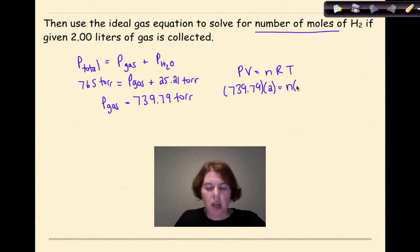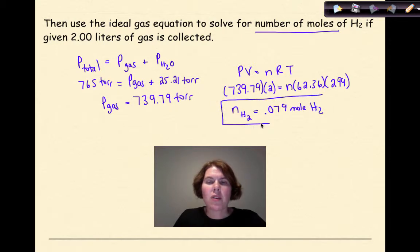We're solving for number of moles, and then we have our gas constant, which is 62.36 torr, and then finally we take our 26 degrees Celsius and convert that into Kelvin, which is 299. So if we do that, we will solve for the number of moles of hydrogen gas, and that is 0.079 moles of hydrogen. And that is one of the things that we are going to do tomorrow, as part of beginning to get ready for the experiment that we're going to do on Monday.